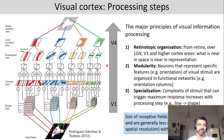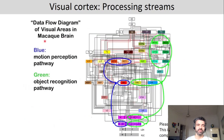Here you can see a data flow diagram showing all the visual areas in the macaque brain, illustrating how specialized these areas can be — in blue, the motion perception pathways, and in green, the object recognition pathways. But this is really just to illustrate how complicated the brain is. Please do not learn this by heart.